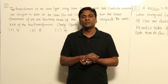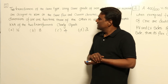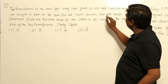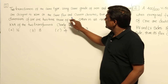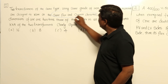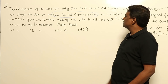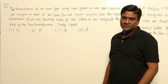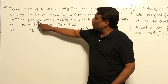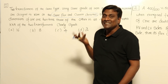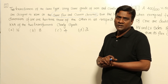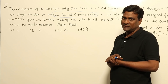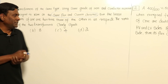Let us take two design engineering problems from an old GATE question. Two transformers of the same type, using the same grade of iron and conductor material, are designed to work at the same flux and current densities. The linear dimensions of one are two times those of the other in all respects. This means the linear dimensions of the core and copper are both changing, so it is a design problem.